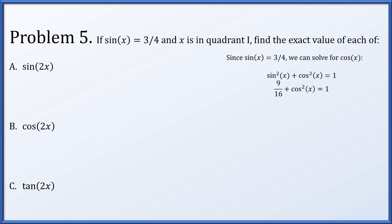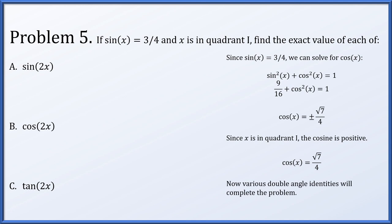Since the sine of x is 3 fourths, the square of that is 9 sixteenths, which allows us to solve that cosine of x is plus or minus root 7 over 4. But since x is in quadrant 1, cosine must be positive, so cosine of x is root 7 over 4. Now the sine of 2x is 2 times sine x cosine x. With sine x equal to 3 fourths and cosine x equal to root 7 over 4, this simplifies down to 3 root 7 over 8.